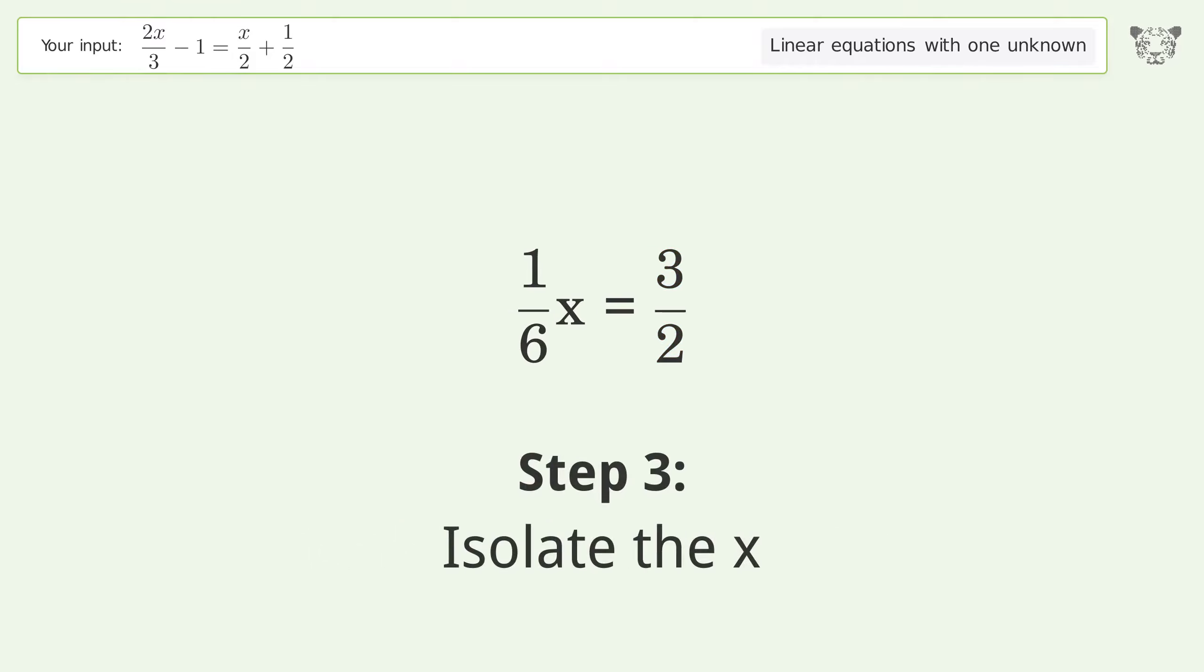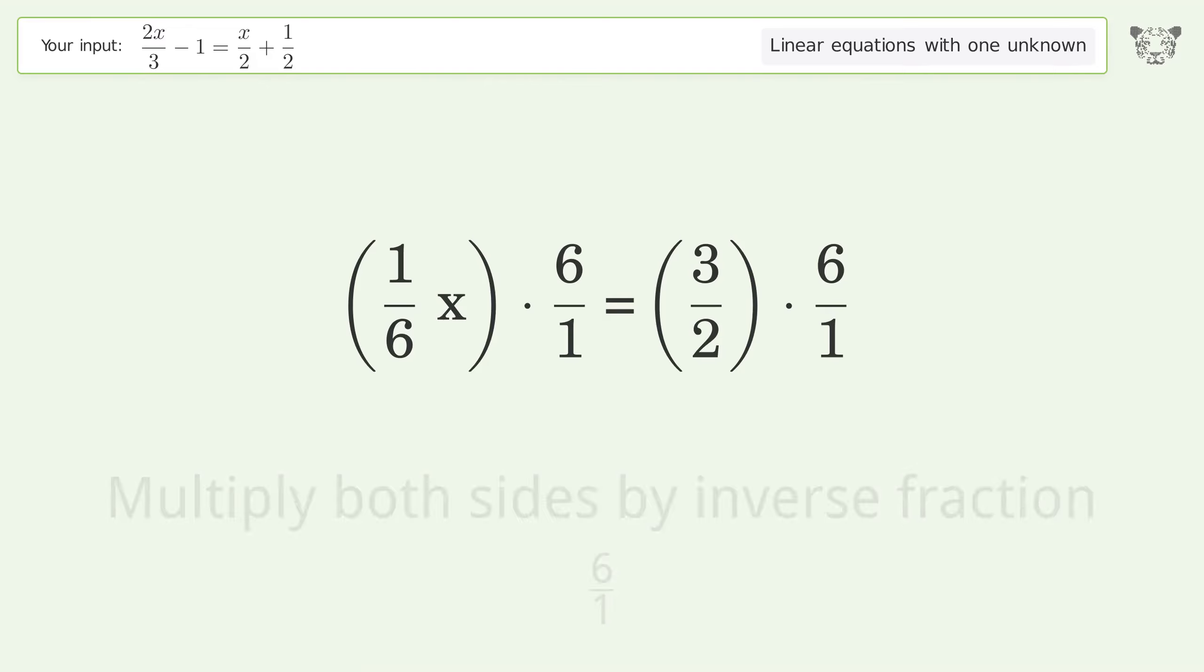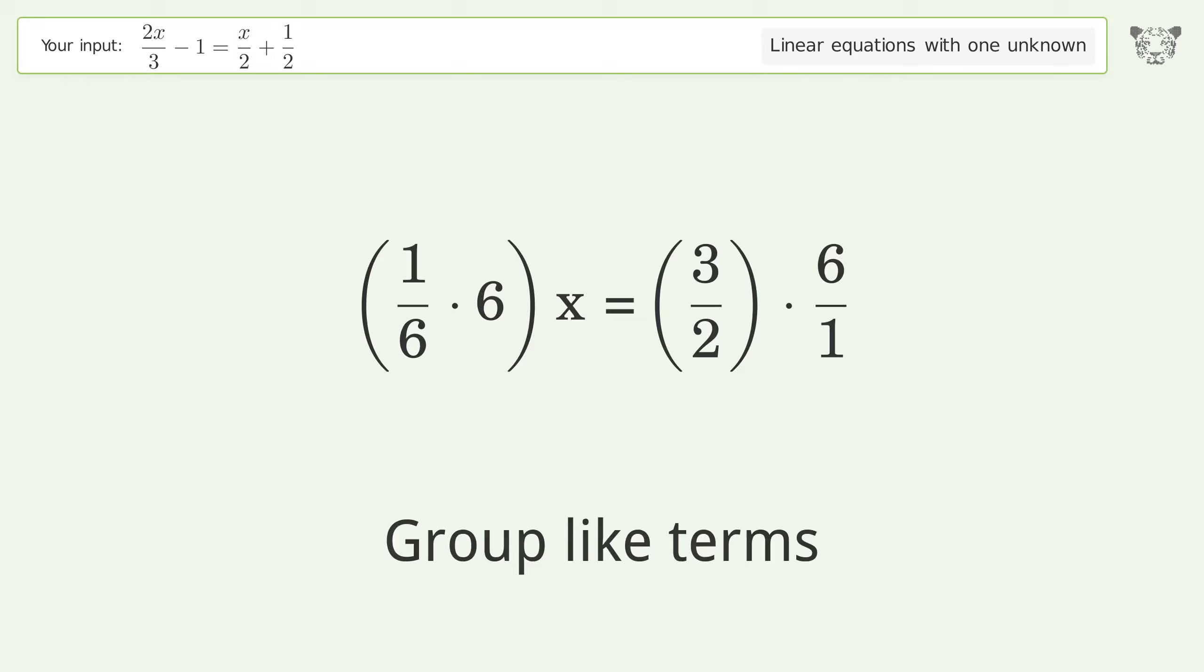Isolate the x. Multiply both sides by inverse fraction 6 over 1. Group like terms. Multiply the coefficients.